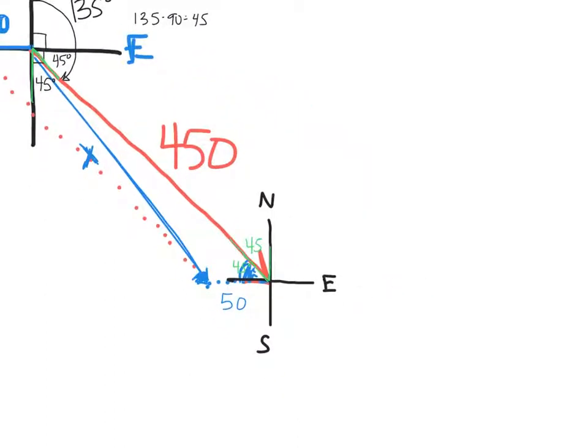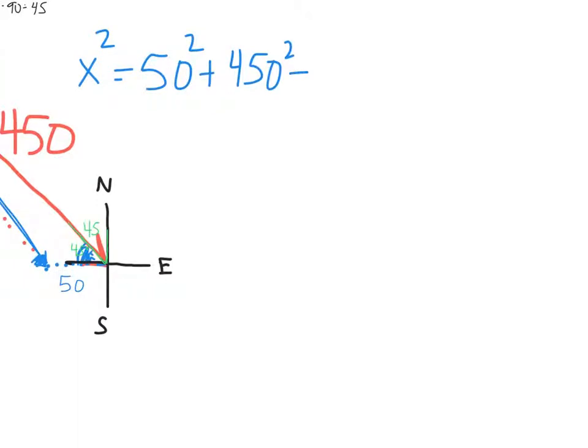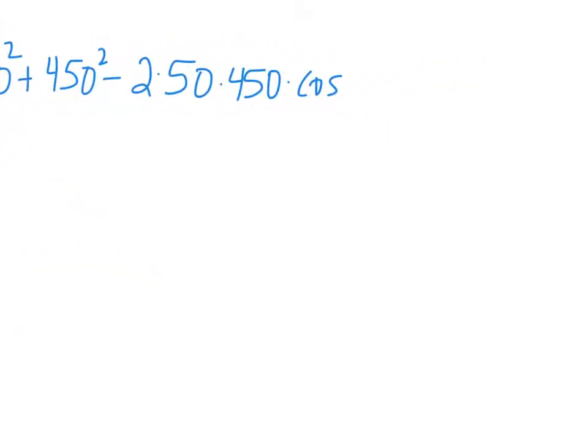So applying the law of cosines that says x squared equals wind squared plus plane speed squared minus 2 times 50 times 450 times the cosine of the angle across from x which in this case is 45 degrees.